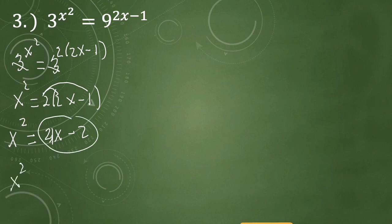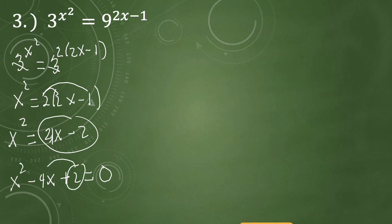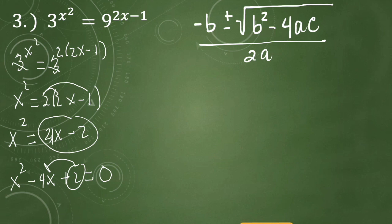Moving terms to one side to form a trinomial, we have x squared minus 4x plus 2 equals 0. Since we cannot find factors of 2 that sum to negative 4, we cannot factor this expression. Instead, we will use the quadratic formula: negative b plus or minus the square root of b squared minus 4ac, all over 2a.